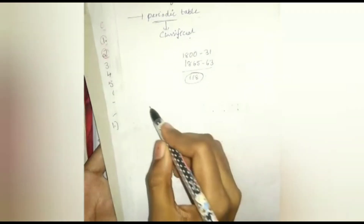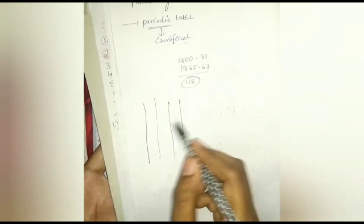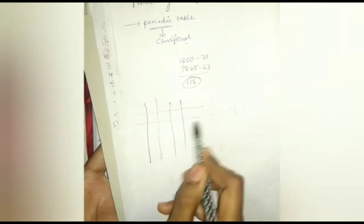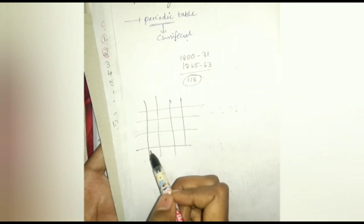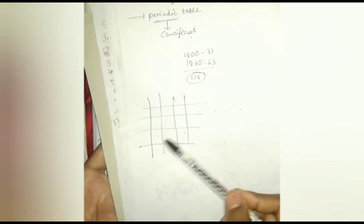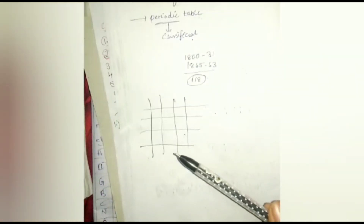The first reported attempt to classify elements was made by French geologist A.E.B. de Chancourtois in 1862. He arranged the elements in order of increasing atomic weights and made a cylindrical table to display the periodic recurrence of properties. This also did not attract much attention.